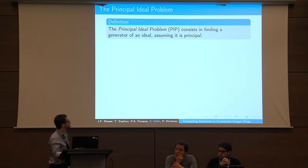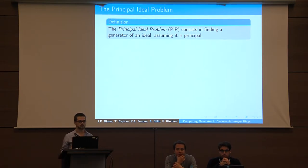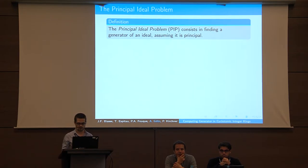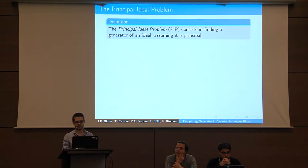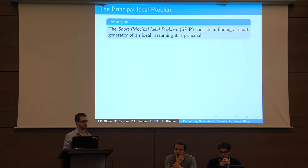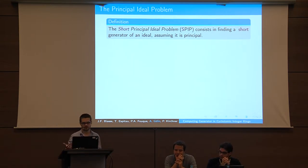First, what is the principal ideal problem? It consists in finding a generator of an ideal, assuming this ideal is principal. This problem is computationally hard, but there are not so many applications in that form, so we have the derived form: the short principal ideal problem, which consists in finding a short generator of this ideal.